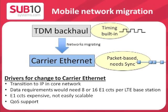The main drivers for this change to carrier Ethernet are: firstly, the transition to IP in the core network; secondly, increasing data requirements, now up to 8 or even 16 E1 circuits needed for an LTE base station; thirdly, E1 circuits are expensive and not easily scalable; and finally, there is a growing demand for QoS support.